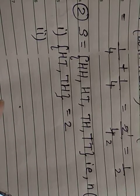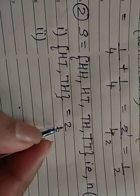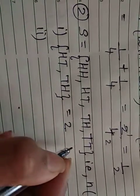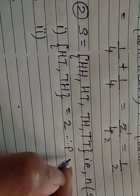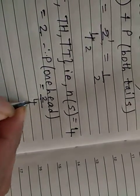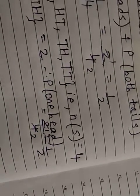Therefore, the probability of getting exactly one head is equal to two divided by four, which is equal to one by two. So the chance of getting exactly one head is 1/2.